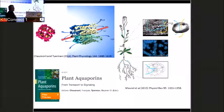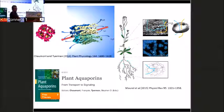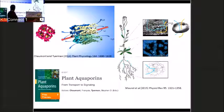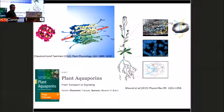We have crystal structures for two plant aquaporins: plasma membrane intrinsic protein PIP2 from Shelburne's group for spinach, and recently a tonoplast intrinsic protein. These corroborate what we know from animal aquaporins — water flow occurs through the monomers of the tetramer. Water flows down its free energy gradient or water potential gradient. There's also a central pore through which other molecules like CO2 may be transported.